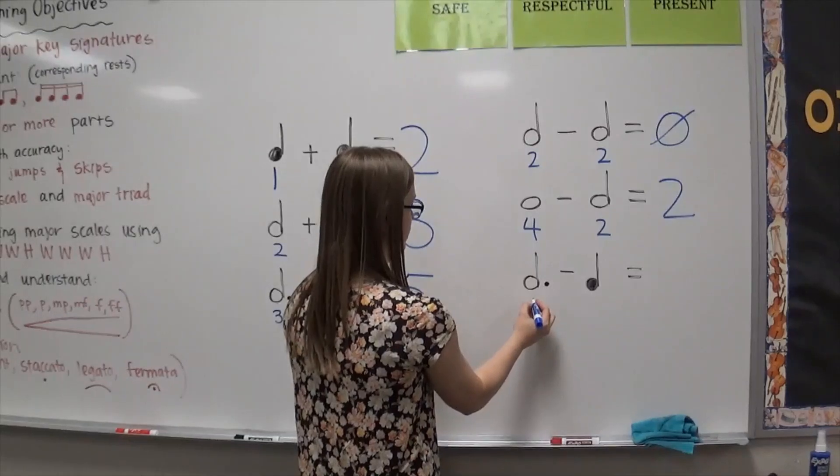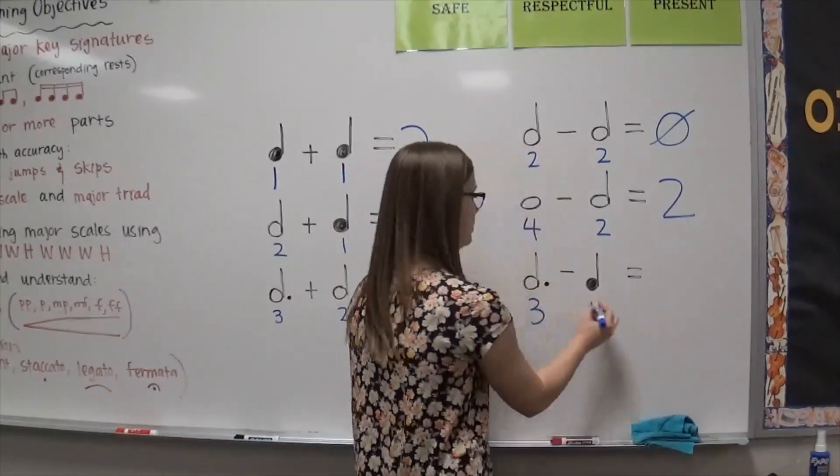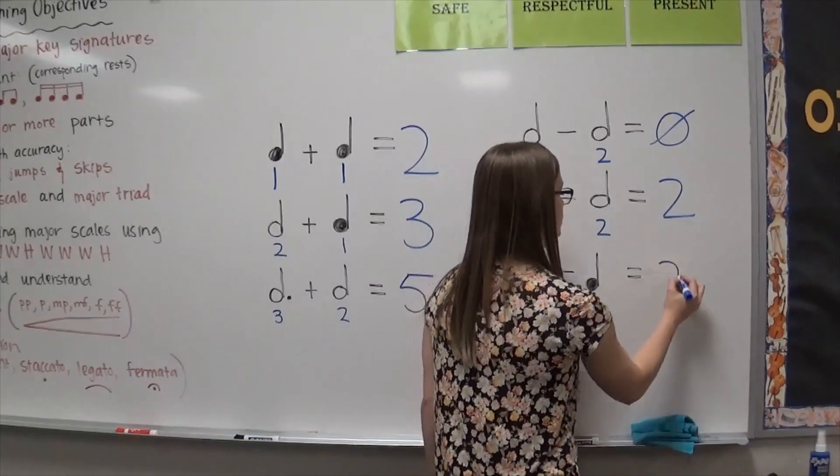Dotted half? Three. And then we know a quarter note is one. Three minus one? Two.